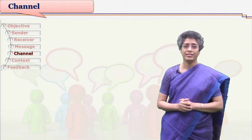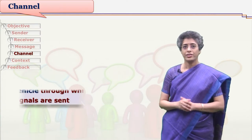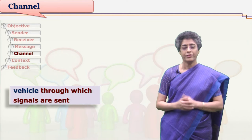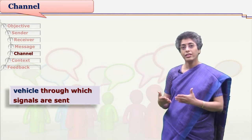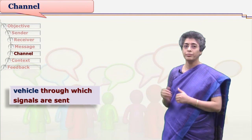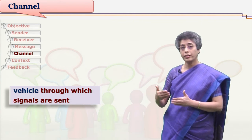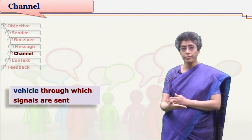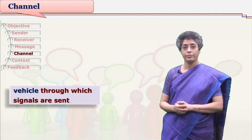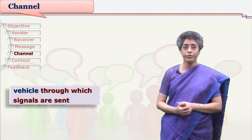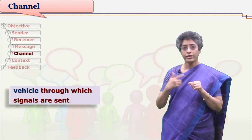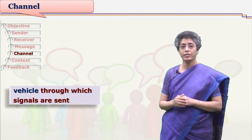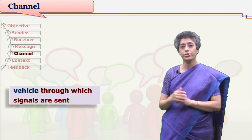What do we mean by a channel? A channel is a vehicle through which signals are sent. Our message is a set of signs and symbols, so to send the signals from sender to receiver, there should be some channel — some vehicle. Whenever we talk face to face, our voice is carried with the air, so air becomes a channel — a vehicle to pass on our audio signals.